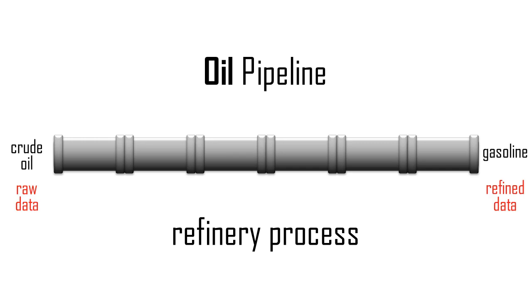We call unprocessed data raw data and processed data refined data. Crude oil is a dark sticky liquid that's not useful until it's refined by chemical engineering processes. Similarly, raw data is often in a messy semi-structured format that cannot be analyzed until it's refined by data engineering tasks.